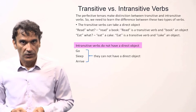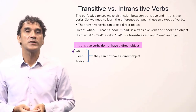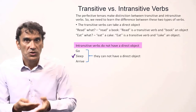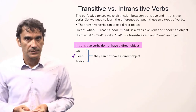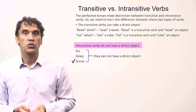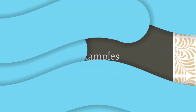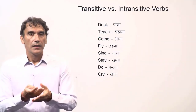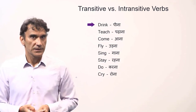For example, the verb 'go' — 'go what?' does not make any sense, so 'go' is an intransitive verb. Similarly, the verb 'sleep' — 'sleep what?' does not apply, it does not make any sense, so 'sleep' is also an intransitive verb. Similarly, the verb 'arrive' — 'arrive what?' does not apply, so 'arrive' is also an intransitive verb.